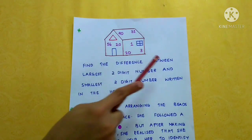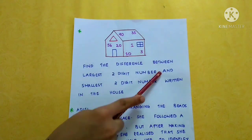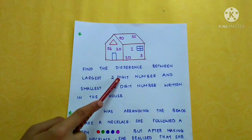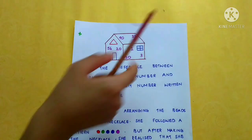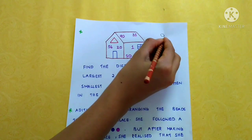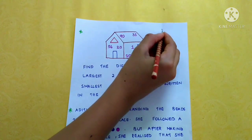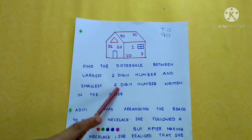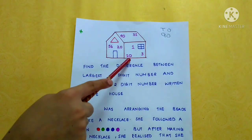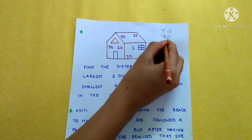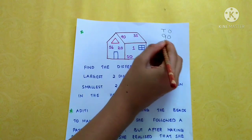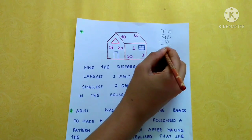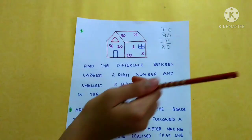Find the difference between the largest two-digit number and the smallest two-digit number written in the house. The largest two-digit number in the house is 90 and the smallest two-digit number is 10. So 90 minus 10 equals 80.